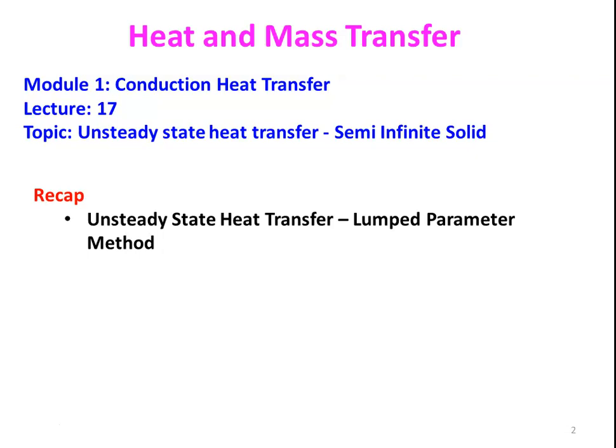In many situations, the thermal conductivity is not very high. There are materials with very low thermal conductivity, like steel around 40, or materials around 15-16, and insulating materials with very low thermal conductivity. In those cases, we cannot apply the lumped parameter method. So we take the semi-infinite solid as another simplification in unsteady state heat transfer, and we discuss how to solve problems on the semi-infinite solid.